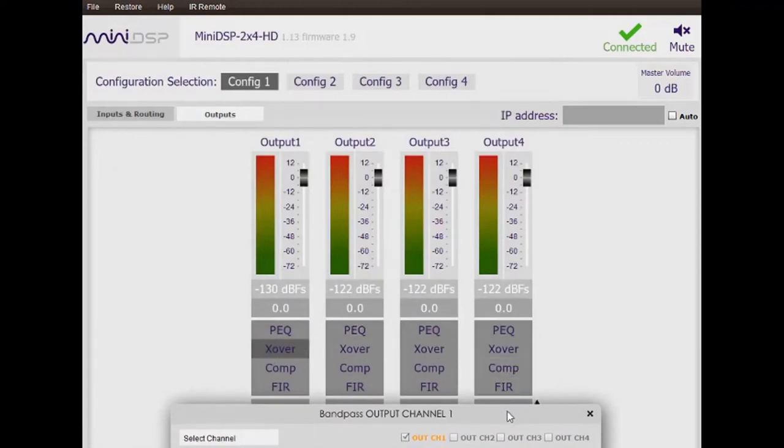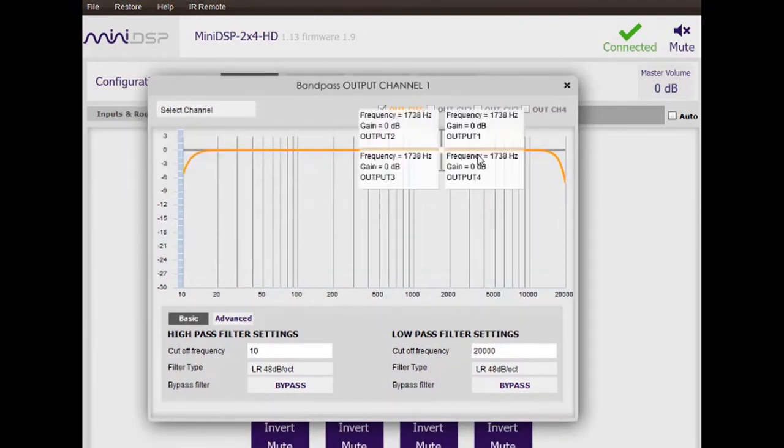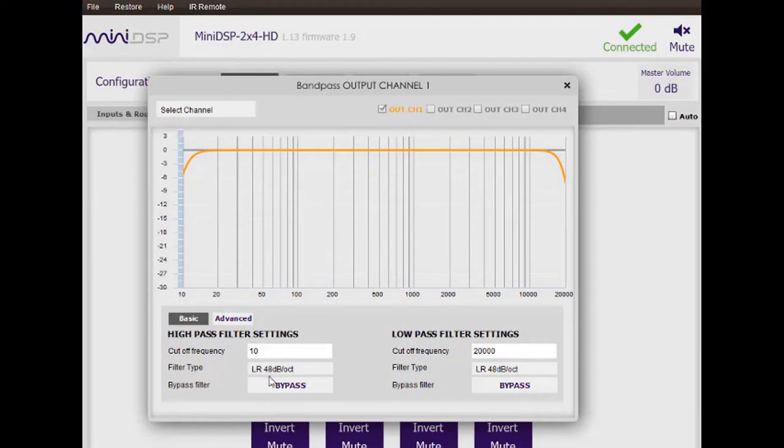We're working on the output channel number one filter, and currently it's set as a simple band pass filter with 10 Hz Linkwitz-Riley. And over here, at the top end, we have a 20 kHz Linkwitz-Riley 48 dB per octave filter.